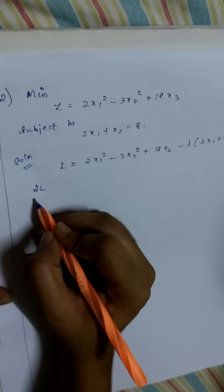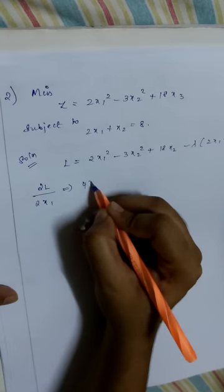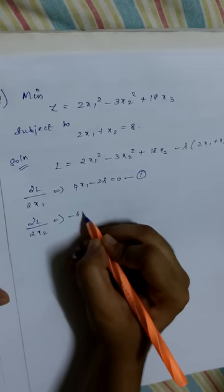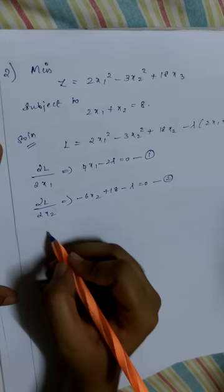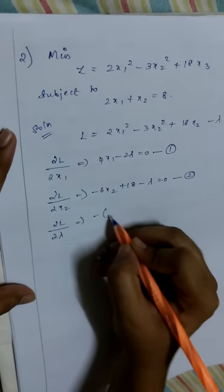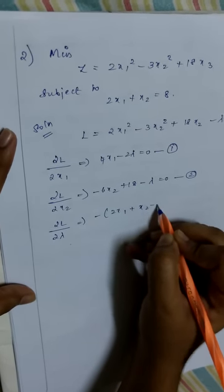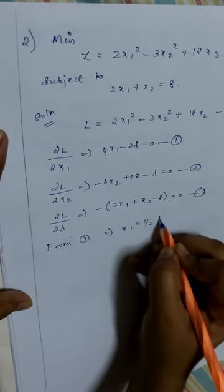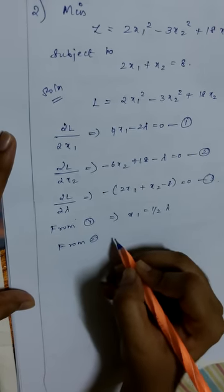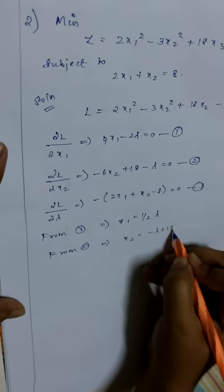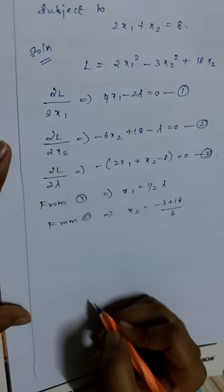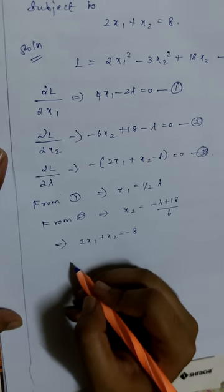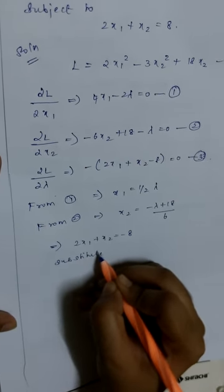In the next step, we differentiate the equation. Dou L by dou x1 equals 4x1 minus 2 lambda equal to 0. Dou L by dou x2 equals minus 6x2 plus 18 minus lambda equal to 0. Dou L by dou lambda equals minus of 2x1 plus x2 minus 8 equal to 0. From equation 1, x1 equals lambda over 2. From equation 2, x2 equals minus lambda plus 18 divided by 6. On putting the values for x1 and x2 into equation 3, we get the value for lambda as 6.